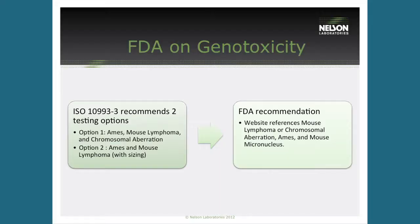So the FDA came out with their own guidance document. That guidance document says that you have to do the Ames test, then either the mouse lymphoma or the chromosome aberration — you choose between the other two in vitro tests — and then the FDA added the mouse micronucleus test, which is the animal test. Before in ISO 10993, the only time to do an animal test was as confirmation of a positive result in one of the in vitro tests. But the FDA is now requiring all medical devices to have the animal test run along with the Ames and either the mouse lymphoma or chromosome aberration.